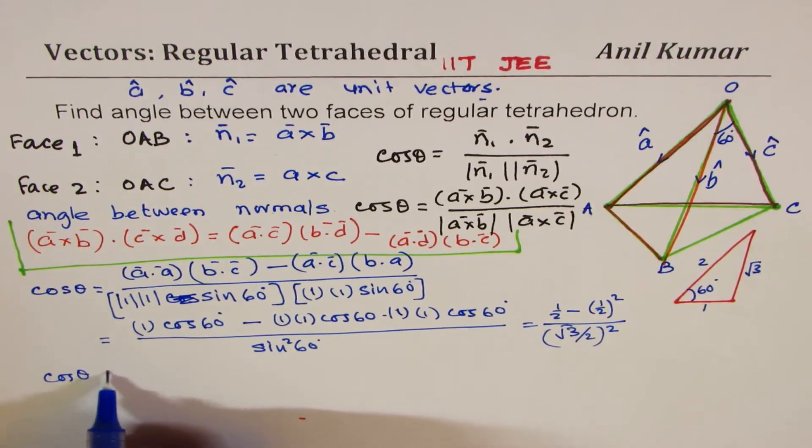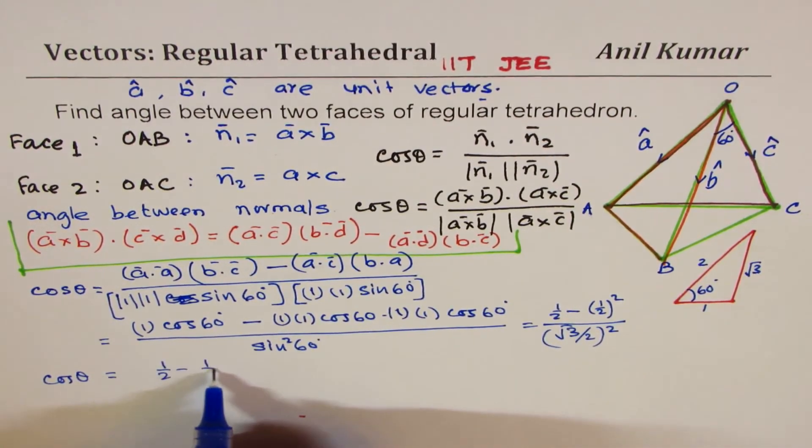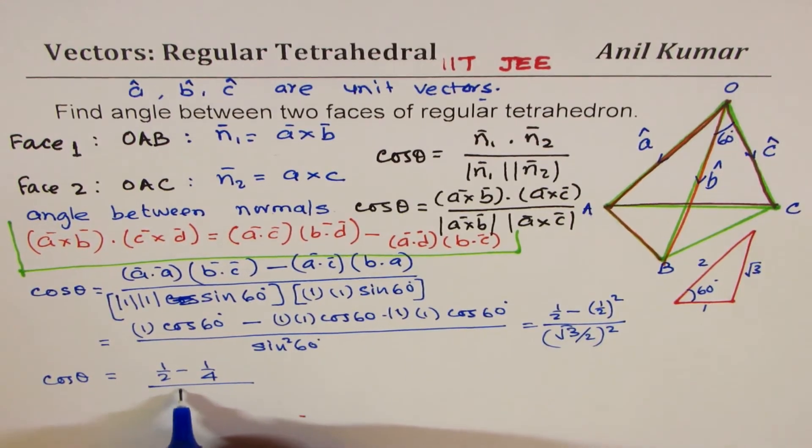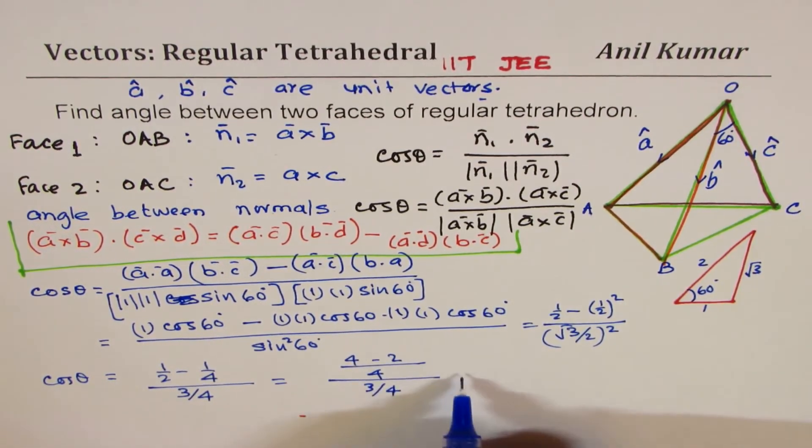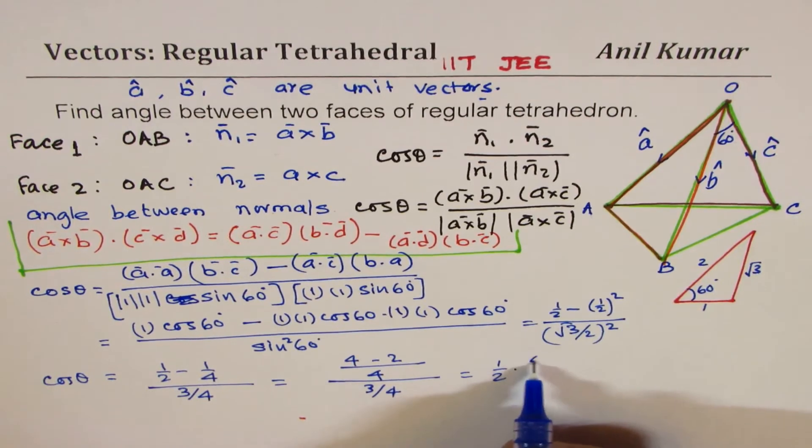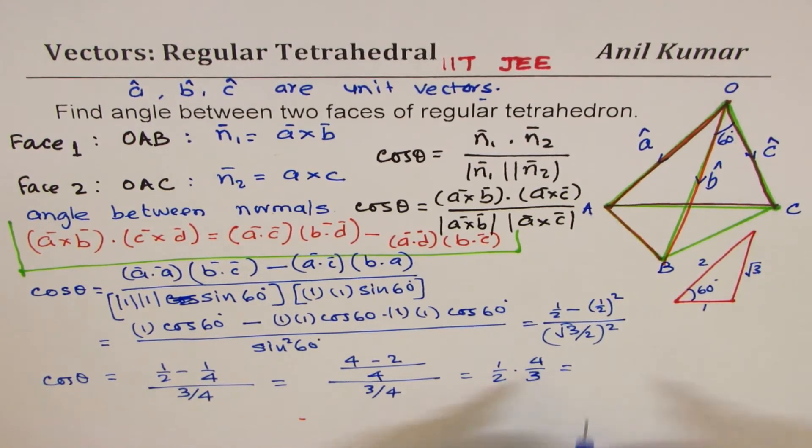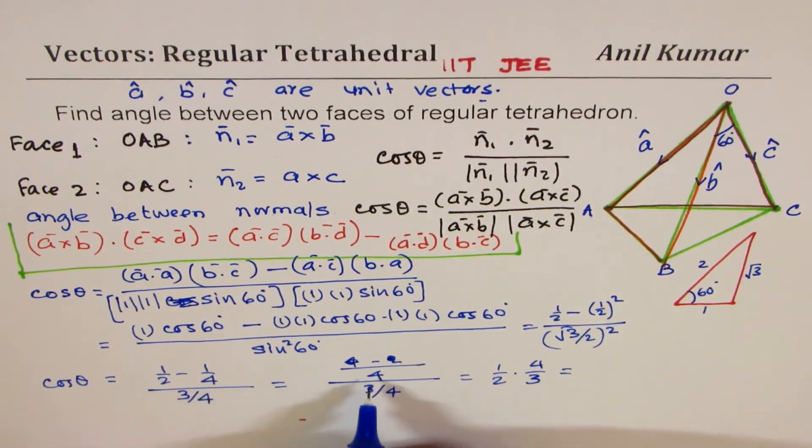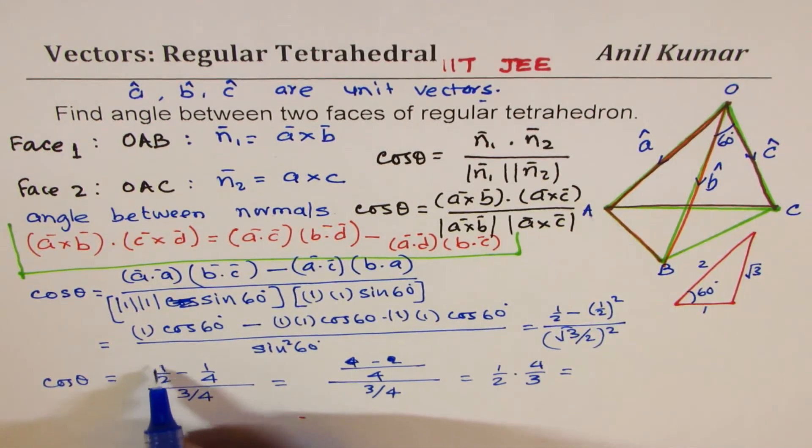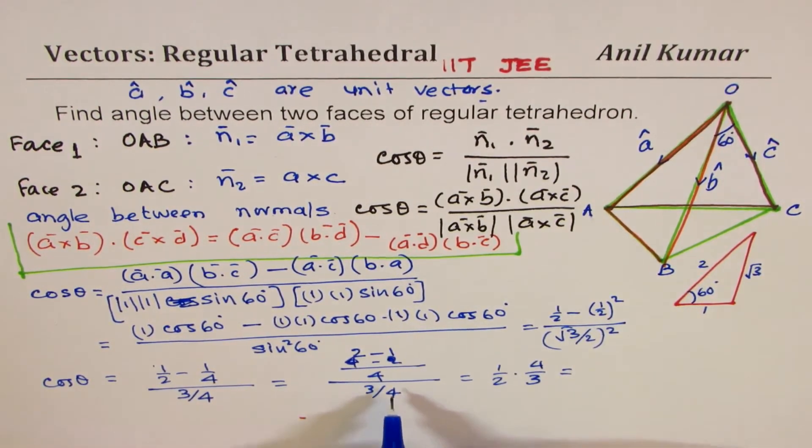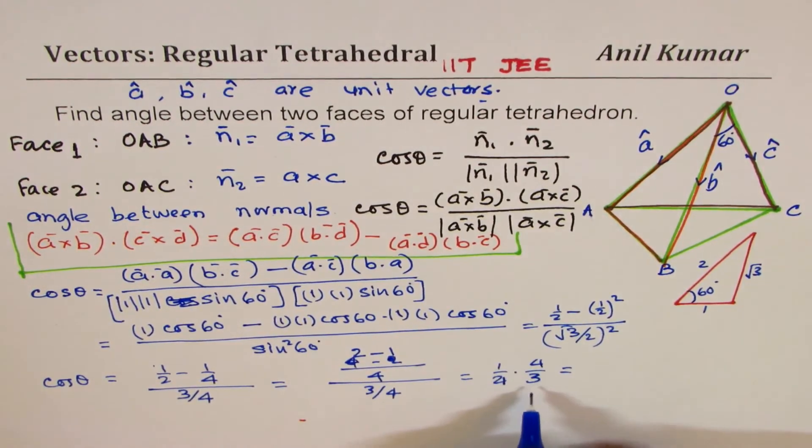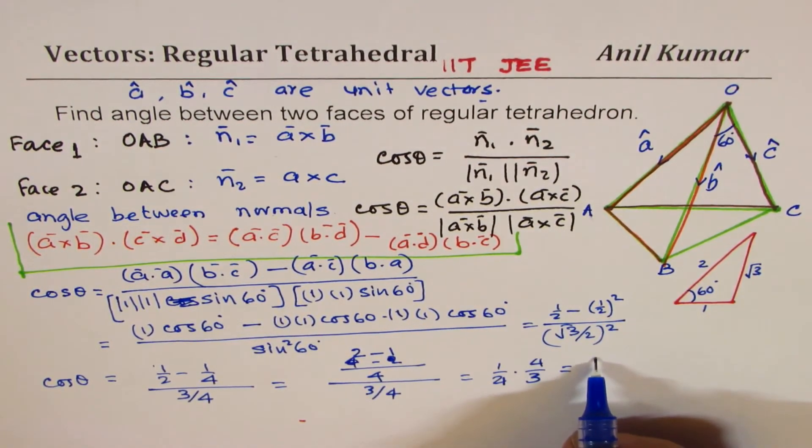If you take common denominator of 4, you get 2 minus 1 over 4, which is 1/4, divided by 3/4. That's 1/4 times 4/3, which gives you 1/3. So cos θ equals 1/3.